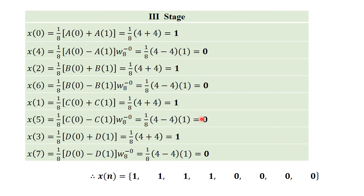The calculated values must be reordered sequentially from X(0) through X(7) for the final answer. The final answer is x(n) = {1, 1, 1, 1, 0, 0, 0, 0}. For any number of problems on inverse DIT FFT — whether 4-point or 8-point — the same procedure applies: write the corresponding diagram and work through each stage to the solution. Thanks for joining.